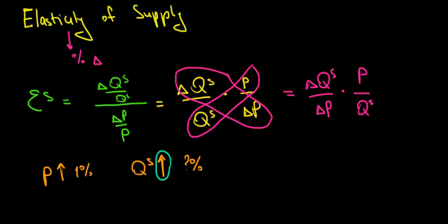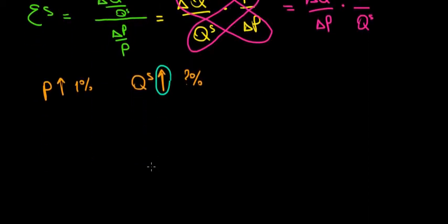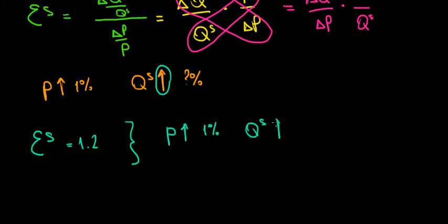If we can charge more, we would like to sell more. So for example, if elasticity of supply equals 1.2, the way we interpret it is that if price increases by 1%, then quantity supplied will increase by 1.2%.